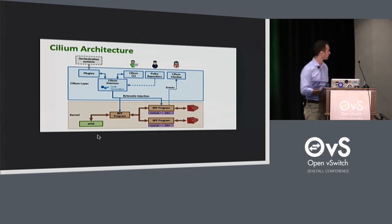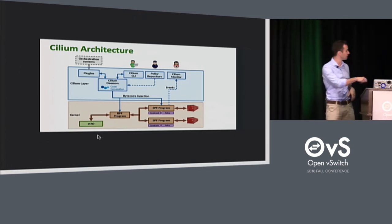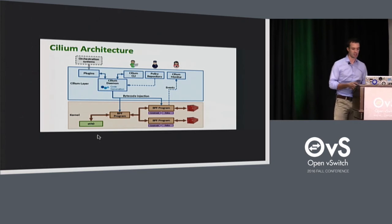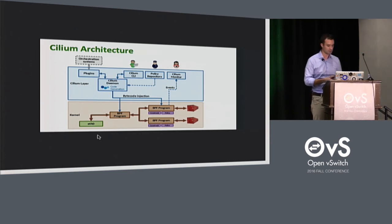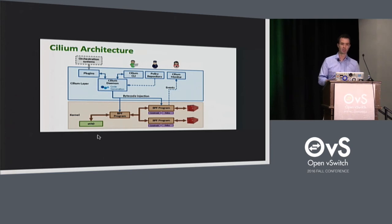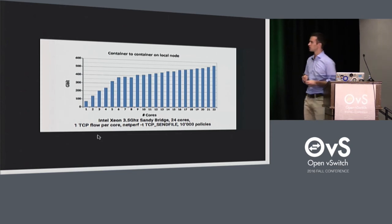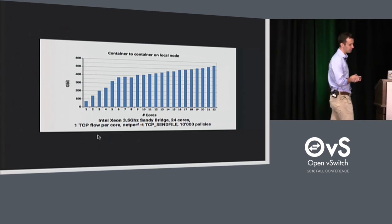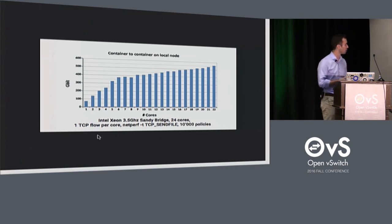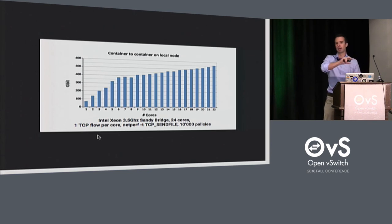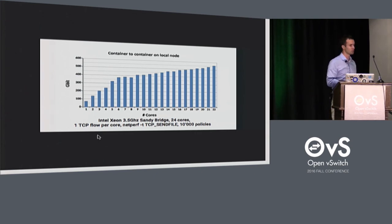We have an agent or daemon that runs on each server, generates the bytecode, and loads it into the Linux kernel. Then we have orchestration plugins that connect it to Docker, Mesos, Kubernetes, and other orchestration systems. We also have a monitoring solution based on the perf ring buffer. Performance-wise, the overhead is basically nothing. These numbers are two local containers talking to each other — no hardware involved — scaling from 1 to 22 cores, one flow per core, and 10,000 policies loaded. We did not measure any overhead introduced by BPF. What we're seeing is basically the performance of the Linux TCP/IP stack for GSO and GRO frames.